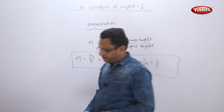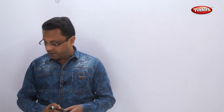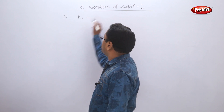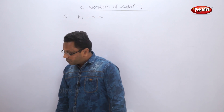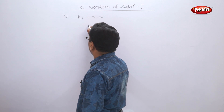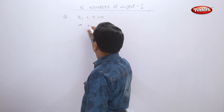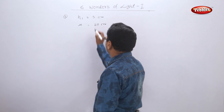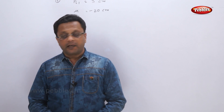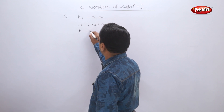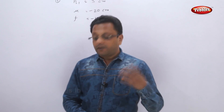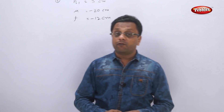Based on these two formulas, at least one example will definitely come in the exam. An object 3 centimeters in size is placed 20 centimeters in front of a concave mirror of focal length 12 centimeters. The object size H1 is 3 cm. The object distance U is 20 cm — but since it is in front of the concave mirror, it is on the left side, so U = −20 cm. The focal length F = 12 cm; since the focal point is also on the left side, F = −12 cm.